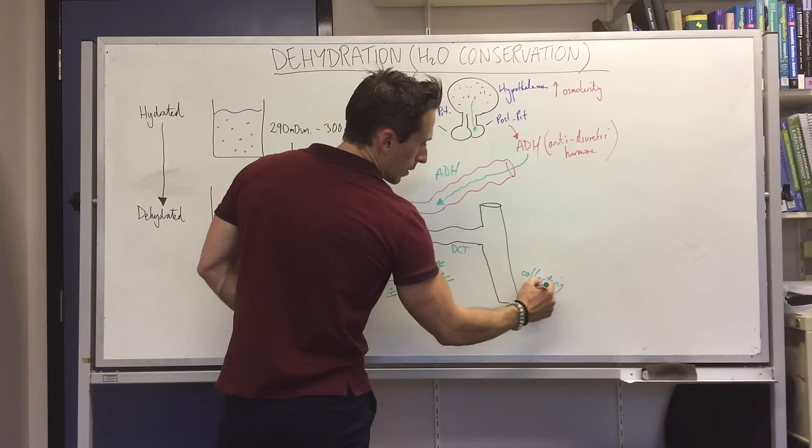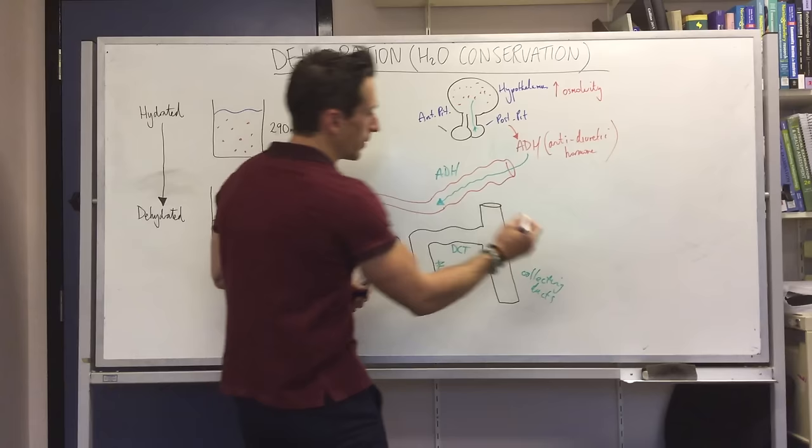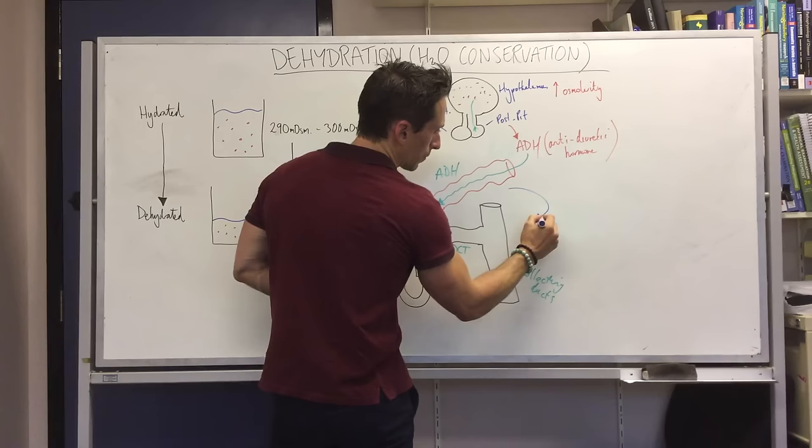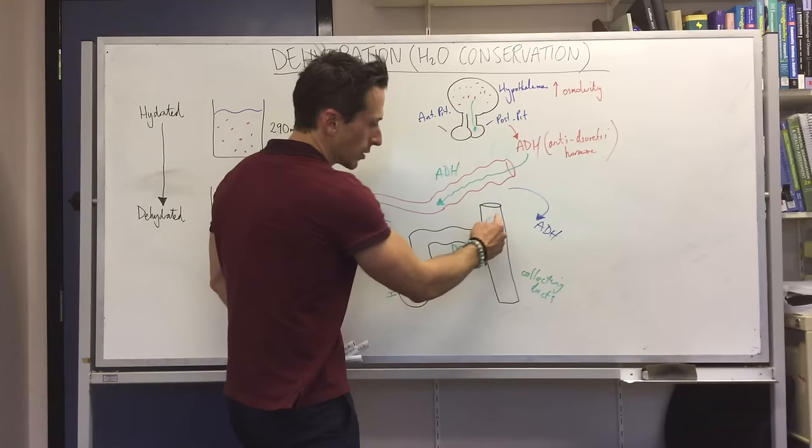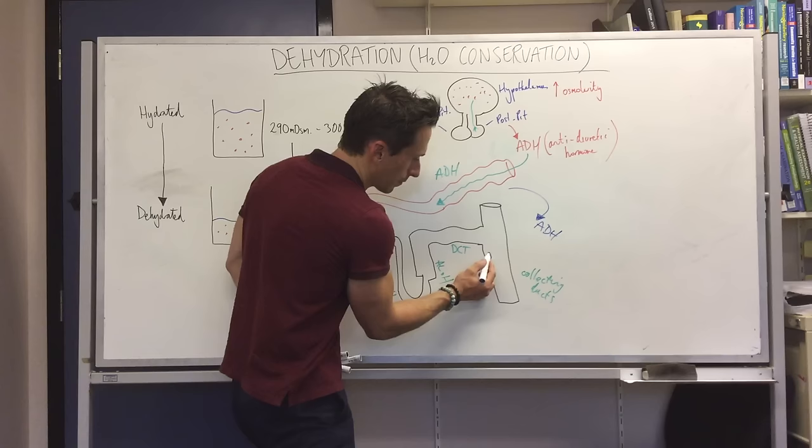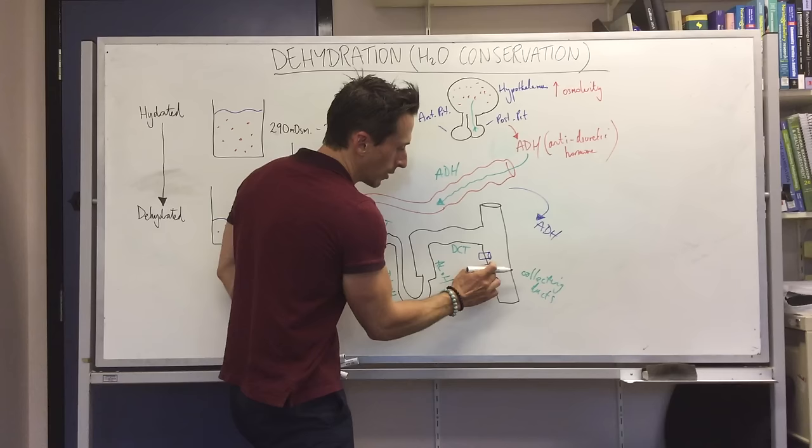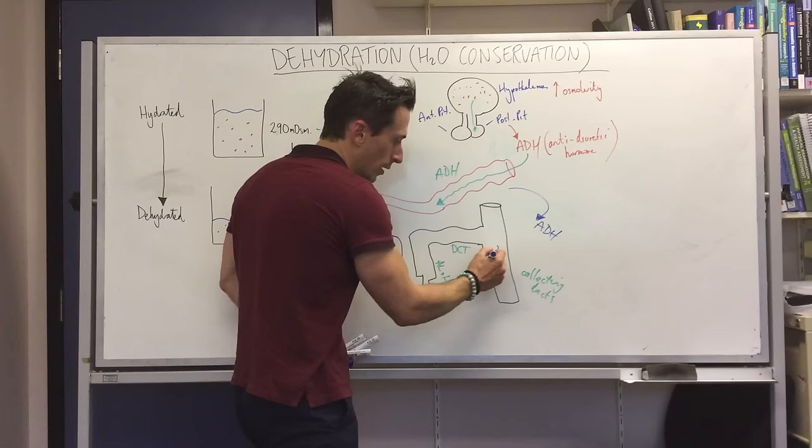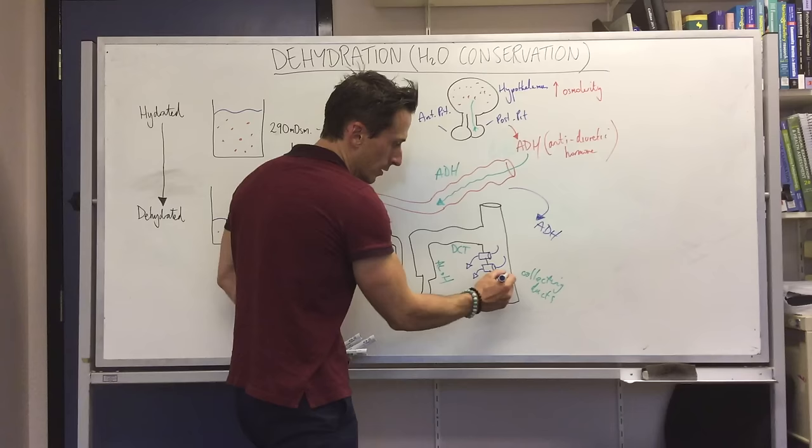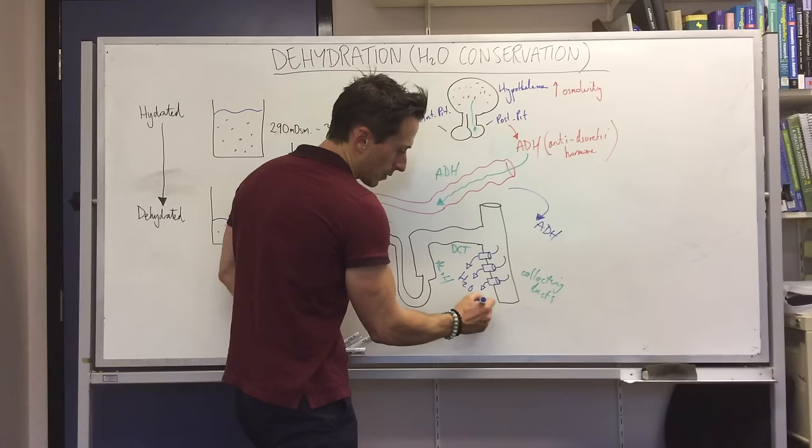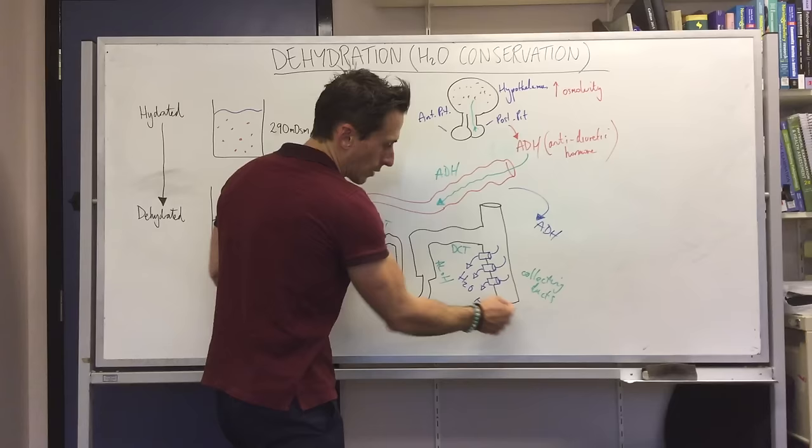So where does ADH act? Well ADH acts at the collecting ducts, which means ADH comes along and how does it function? Well ADH inserts proteins into the walls of the collecting ducts. These proteins are called aquaporins. So what does aqua mean? Aqua means water. What does porin mean? It means hole. So it literally means water holes. ADH inserts water holes into the collecting ducts, and what do they do? Well they tell water to jump back into the blood and into the body. Why is that important? Well we're keeping our water, we're holding on to it, because remember if the water stayed in this collecting duct it ultimately comes out as pee.